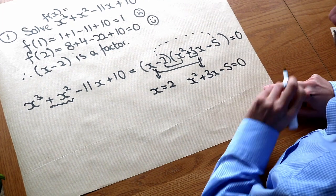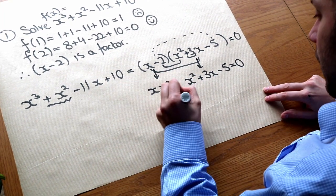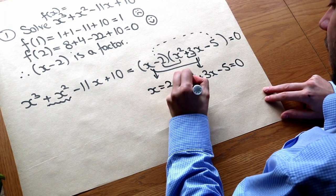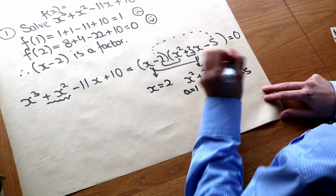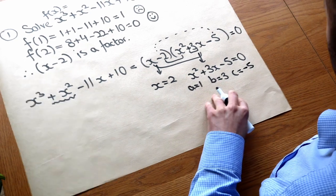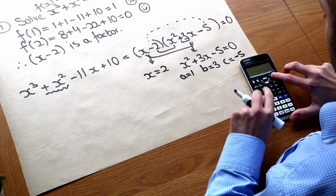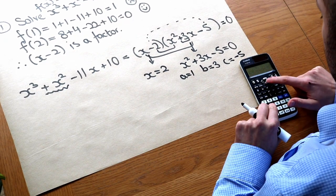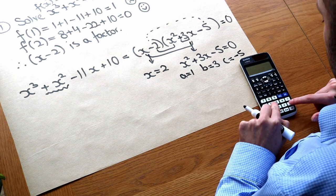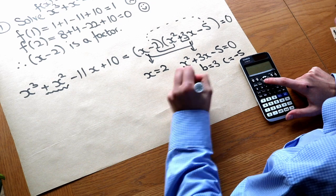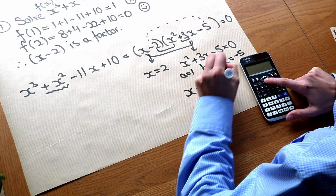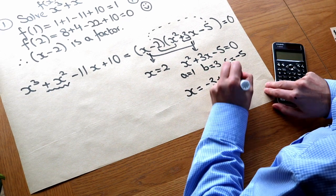Now that doesn't factorise so we're going to have to use a quadratic formula. So the a is one here, b is three, c is minus five and then we can use a quadratic formula or to be honest we could just use a quadratic solver on our calculator. We've got one x squared plus three x minus five and that gives you two solutions. x is equal to minus three plus or minus the square root of twenty-nine over two.